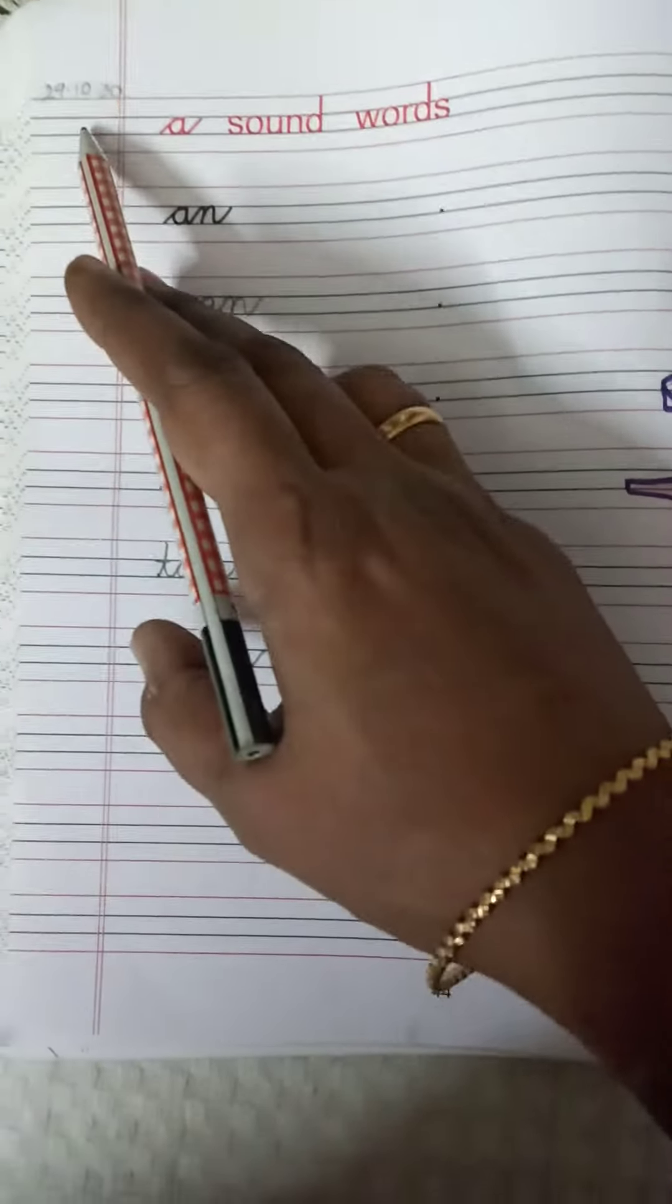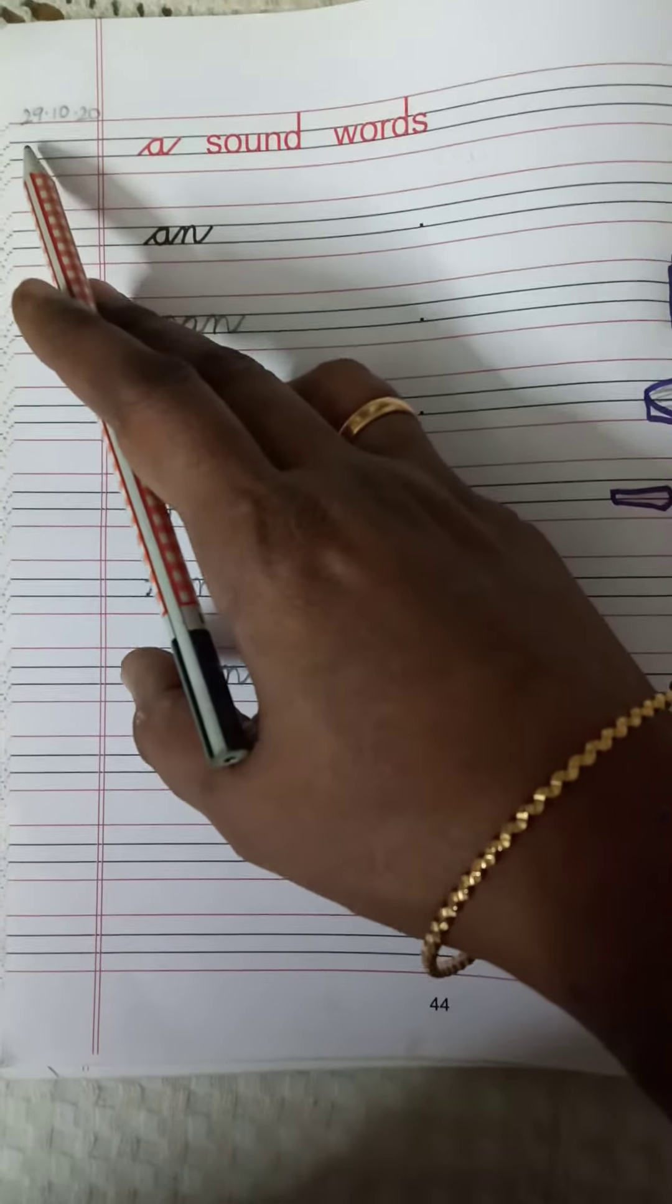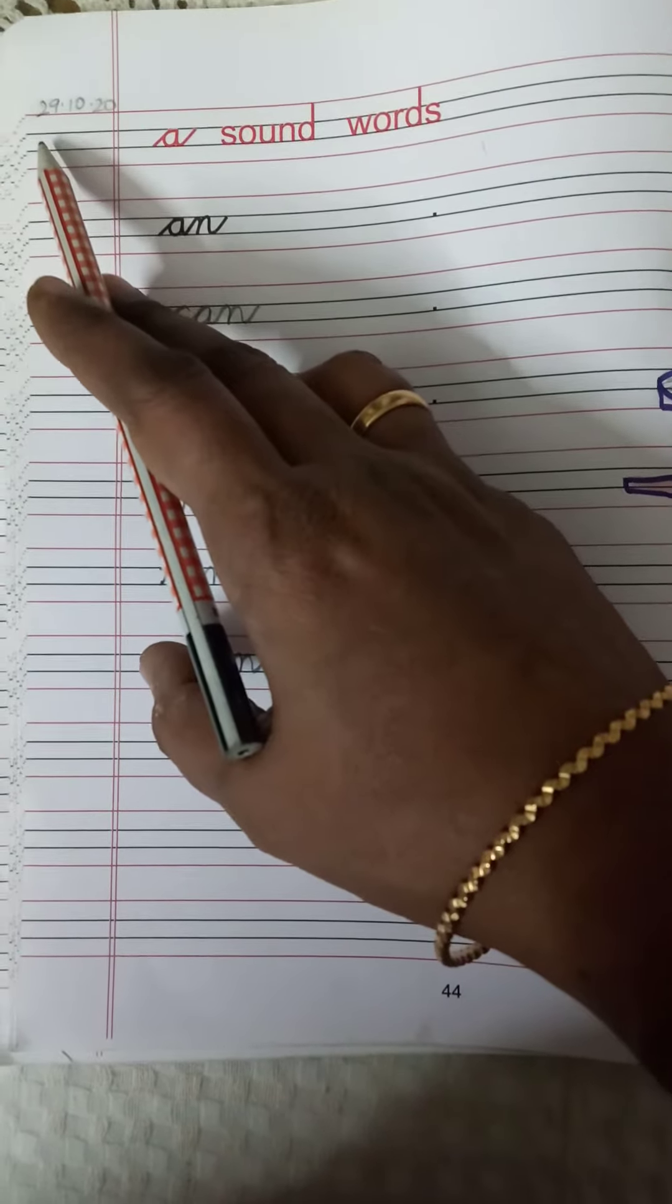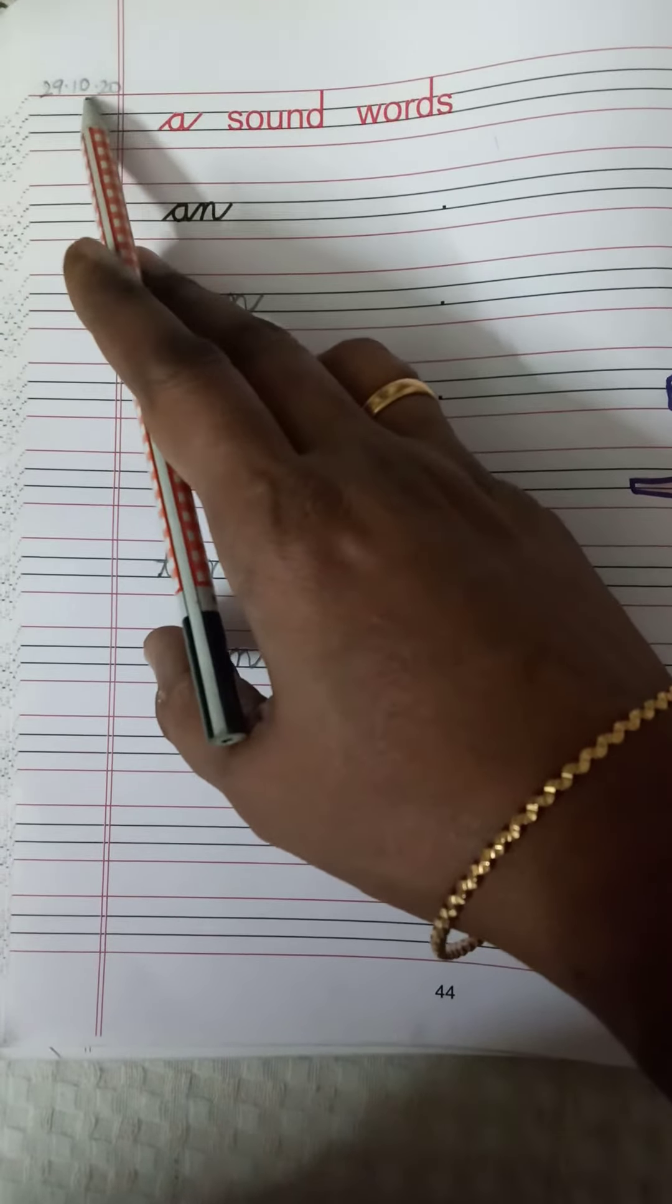Good morning children. Now please write today's date. Today is Thursday and it is 29/10/20.